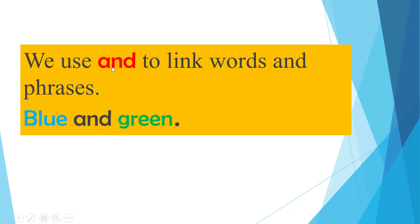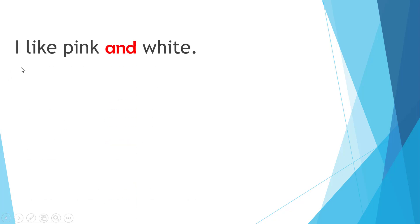We use 'and' — the word 'and' — to link words and phrases together. Blue and green. If we have two things and we want to link them together, we say blue and green. Here are some examples: I like pink and white.